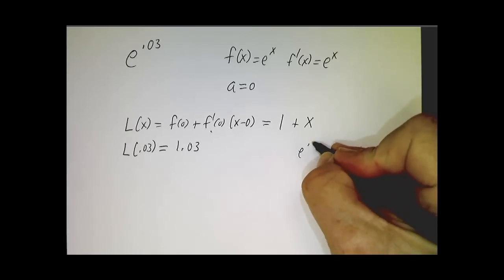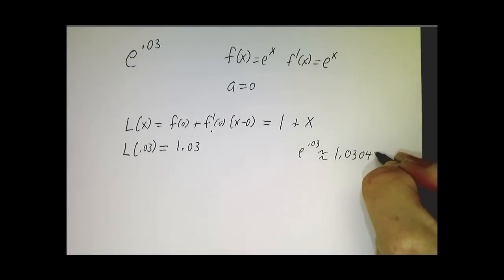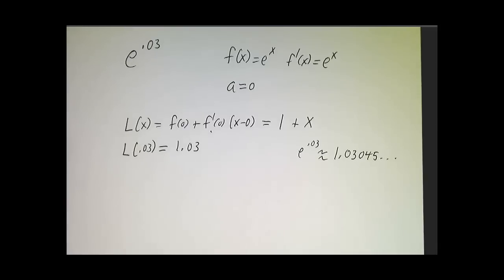In fact, e to the 0.03 is approximately 1.03045. Again, it's not exact, it's pretty darn close.